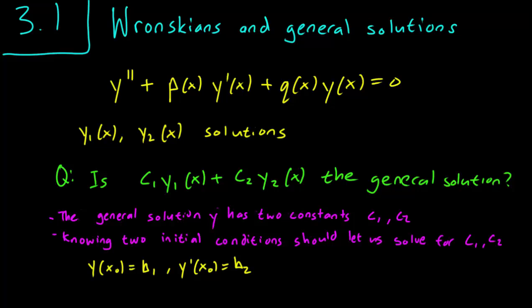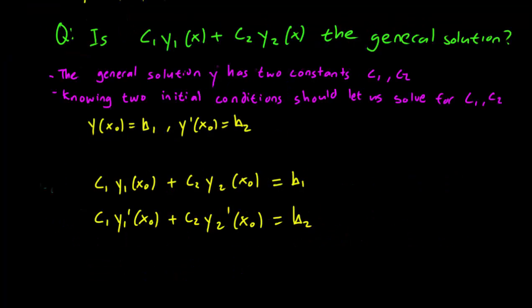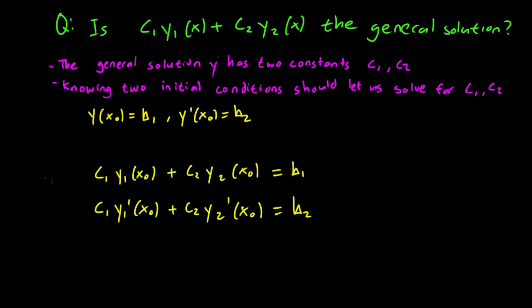So let's see if this candidate general solution, c1y1 plus c2y2 has these properties or not. So if we guess that c1y1 plus c2y2 is a general solution, let's just plug that in our equation. In that case, y(x0) is c1y1(x0) plus c2y2(x0), and we have that initial condition that that's equal to b1.